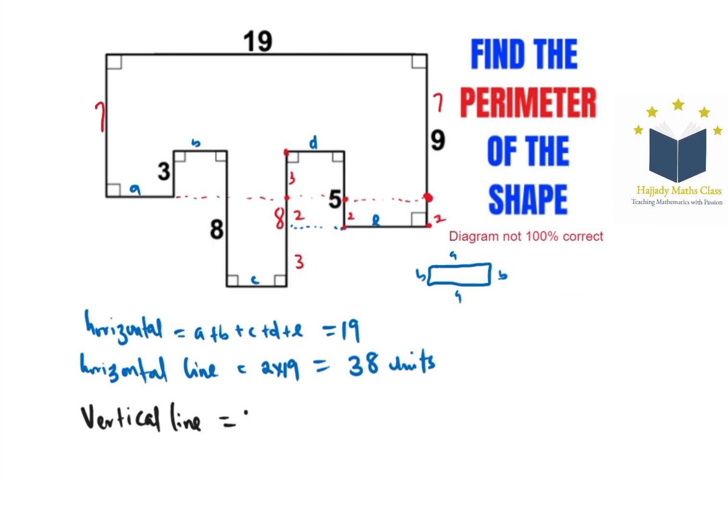I'm gonna have 7 + 3 + 8 + 3 + 2 + 3, which also sum up to 8, + 5, and lastly + 9. This is the same thing as 40 units.